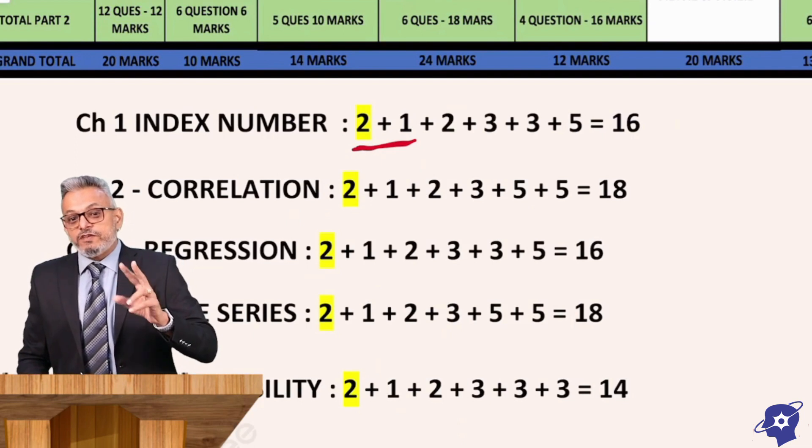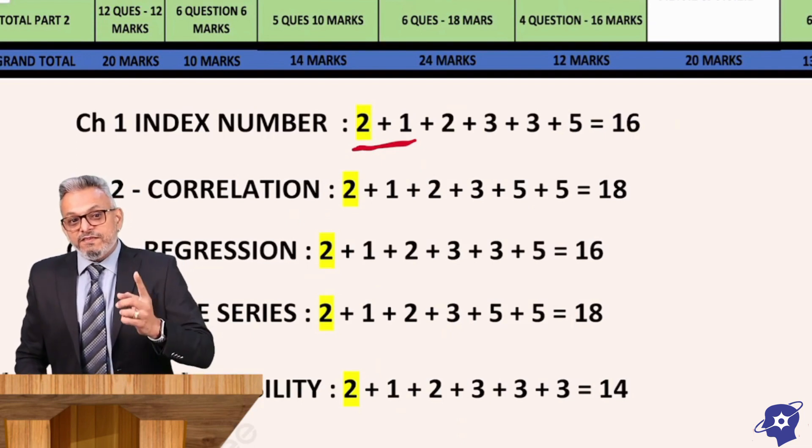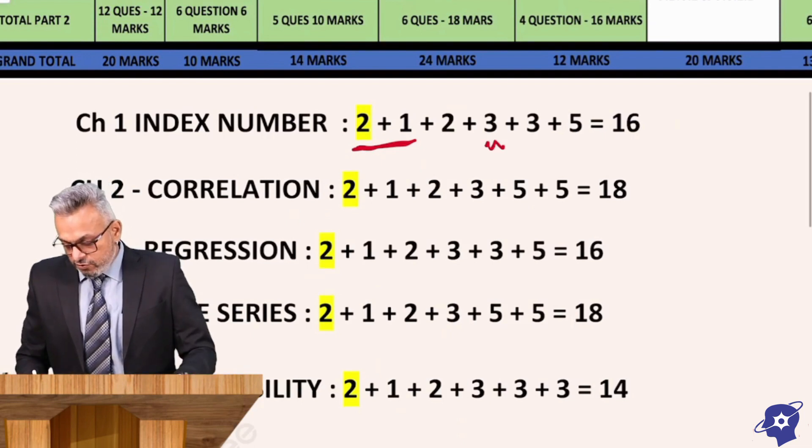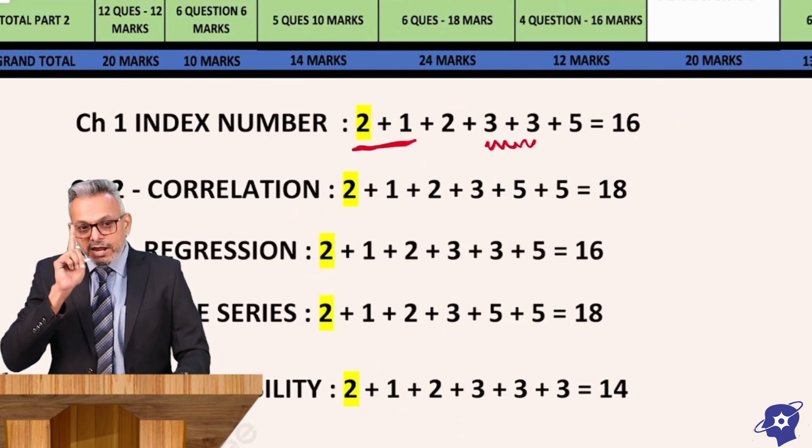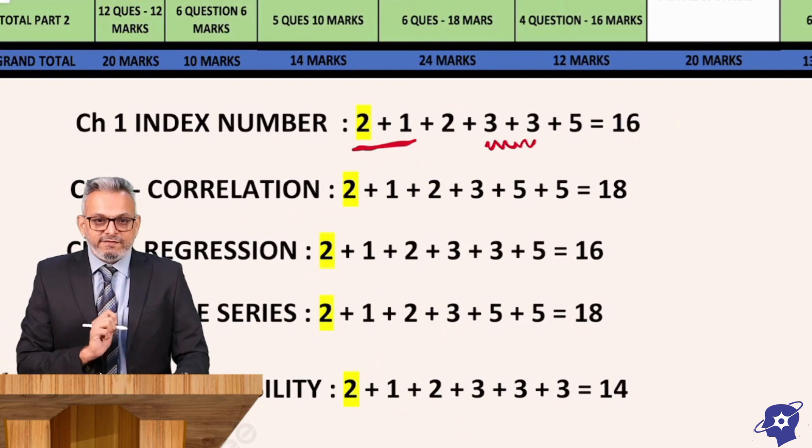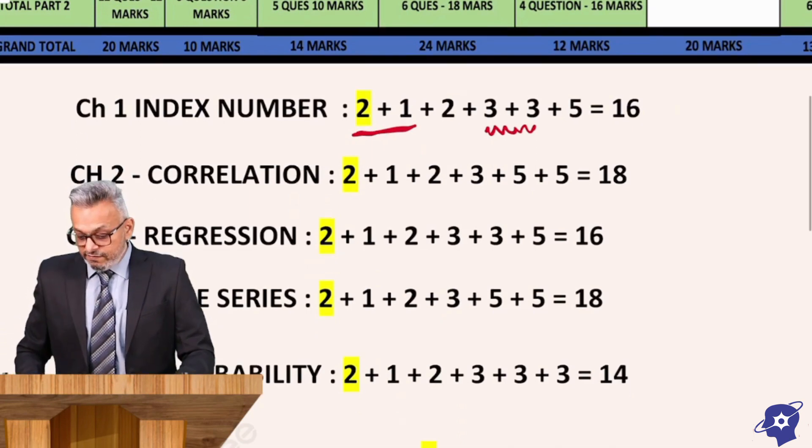Next is 2 marks question, then 3 marks question, 3 marks question again, and section F is of 5 marks. Whenever you see this repeat like 3 + 3, repeat means there are options.